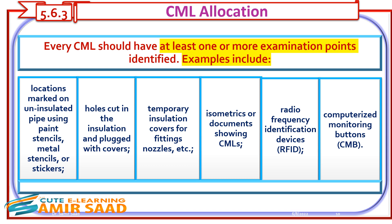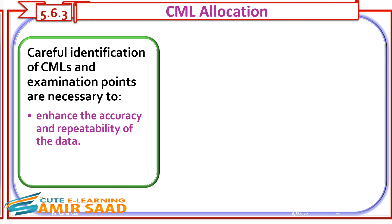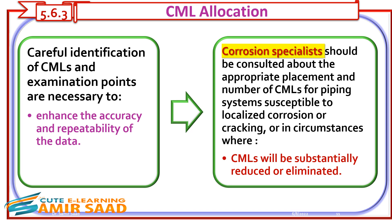Examples of examination point identification include: locations marked on uninsulated pipe using paint stencils, metal stencils, or stickers; holes cut in the insulation and plugged with covers; temporary insulation covers for fittings, nozzles, etc.; isometrics or documents showing CMLs; radio frequency identification devices (RFID); and computerized monitoring buttons (CMB). Careful identification of CMLs and examination points is necessary to enhance the accuracy and repeatability of the data. Corrosion specialists should be consulted about appropriate placement and number of CMLs for piping systems susceptible to localized corrosion, cracking, or where CMLs will be substantially reduced or eliminated.